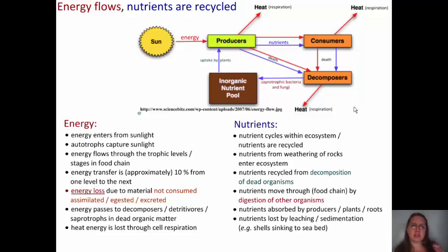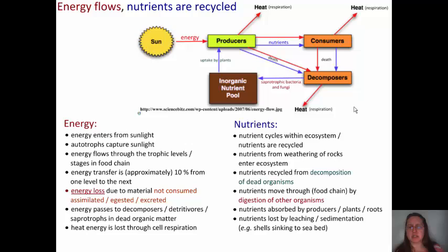Energy flows and nutrients are recycled — that's the big overall theme of these two sections. Energy enters from sunlight, autotrophs capture sunlight, and energy flows through the trophic levels of the food chain. That energy transfer is only approximately 10% because of energy lost due to material not being consumed, assimilated, digested, or excreted. The energy then passes to decomposers — detrivores and saprotrophs — in dead organic matter. Heat energy is lost through cell respiration. Nutrients, however, are cycled within the ecosystem. They can also come from the weathering of rocks, are recycled from decomposition of dead organisms, move through the food chain by digestion, are absorbed by producers' roots, and are lost by leaching or sedimentation.